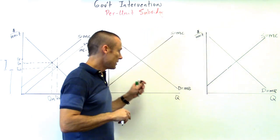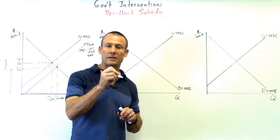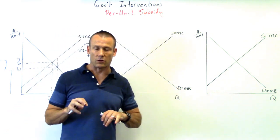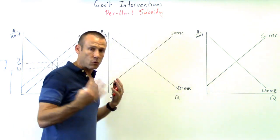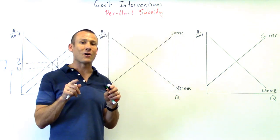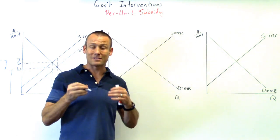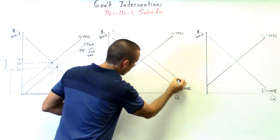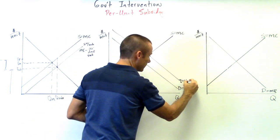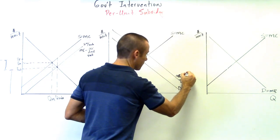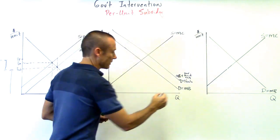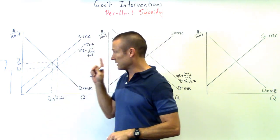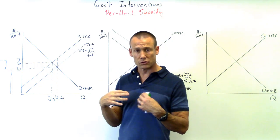Now, a different situation: the government physically gives the per unit subsidy to the consumer, not the producer. In this case we shift the demand or marginal benefit curve. The consumer gets the good plus money on top of that — the per unit subsidy is an additional benefit to the consumer. So the new demand curve is marginal benefit plus per unit subsidy. Note that giving the subsidy to the producer is a subtraction from their cost, while giving it to the consumer is an addition to their benefit.